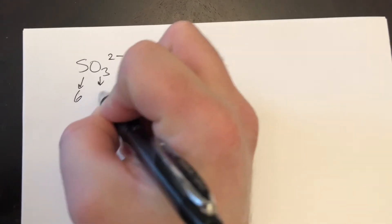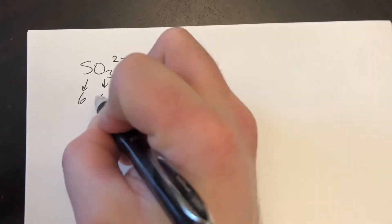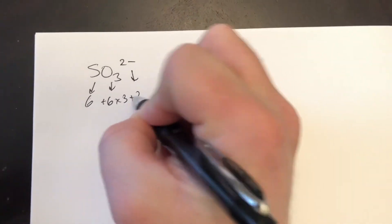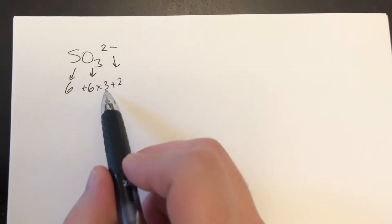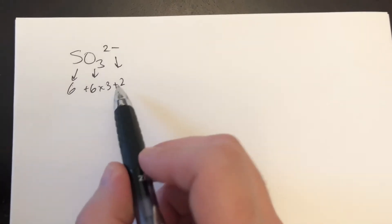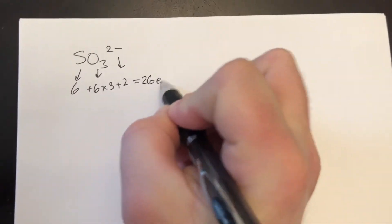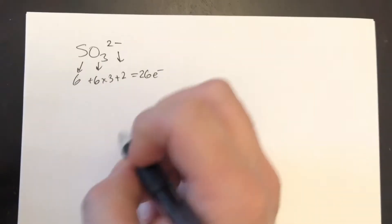Let's try one more: SO₃²⁻. SO₄²⁻ is sulfate; this is sulfite. Sulfur has six valence electrons, oxygen has six times three, and there are two extra electrons from the 2-minus charge. Six times three is 18, plus six is 24, plus two is 26 electrons total. Sulfur is the farthest away from fluorine, so it's the best central atom, and we're going to have three oxygens attached.